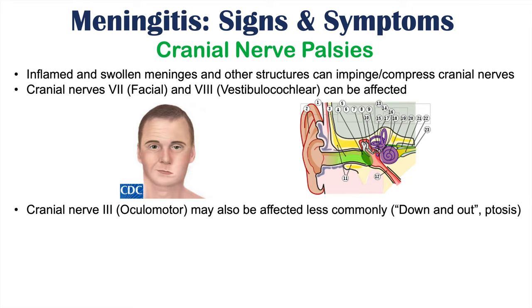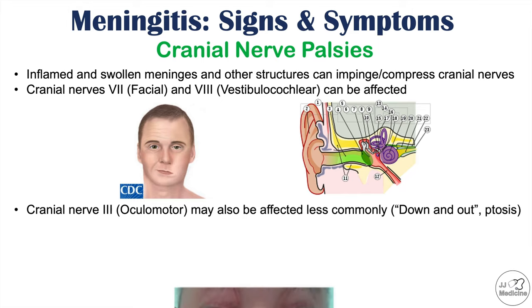Cranial nerve 3, the oculomotor nerve, can also be affected, but is most often less commonly affected than the other cranial nerves in meningitis. If cranial nerve 3 is affected, we get a 'down and out' eye position and ptosis.